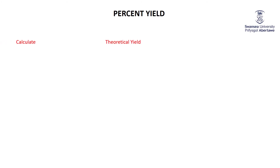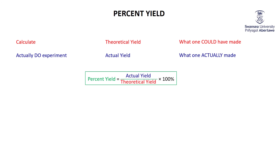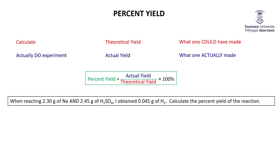A couple of important phrases: percent yield. Everything we've been calculating is the theoretical yield — what could have been made if everything went perfectly. When you actually do the experiment, that's the actual yield — what was actually made. The percent yield is actual yield divided by theoretical yield, times 100.